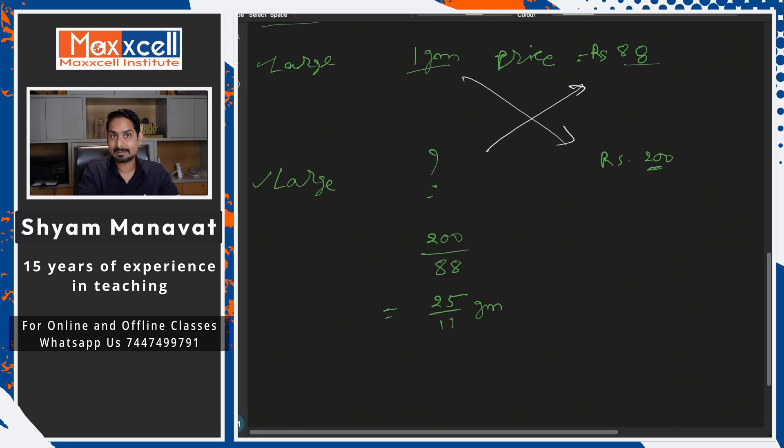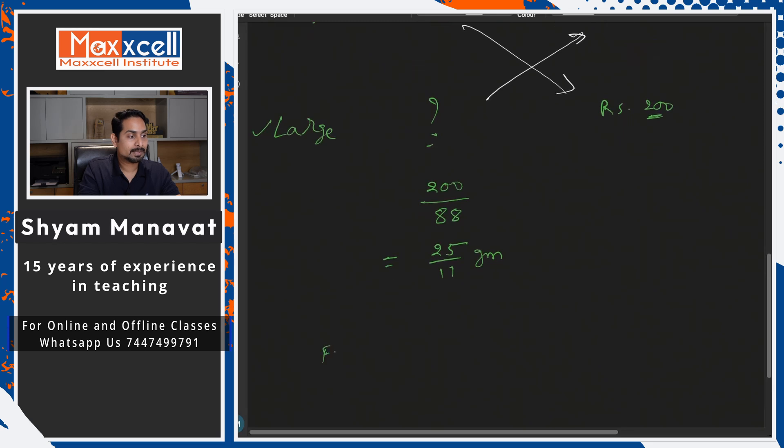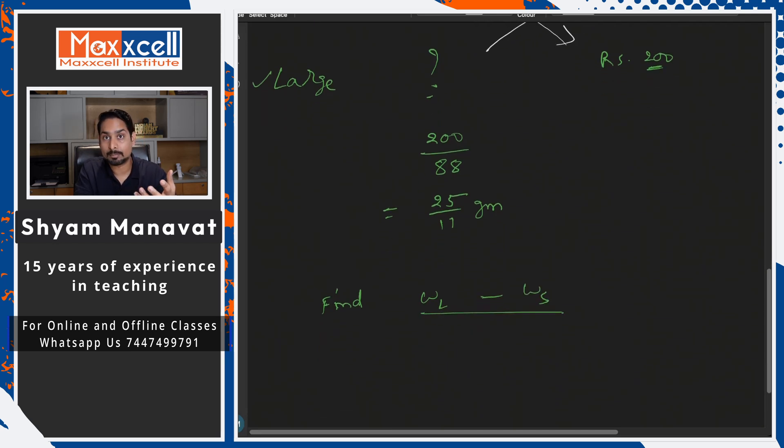Now, is that the answer? No. Question said find the percentage more. When you compare the weight of the large with weight of the smaller, find the percentage more. So what is the formula of percentage more, percentage increase? That is difference by initial. You are comparing with the smaller box. Multiply by 100 to convert into percentage.